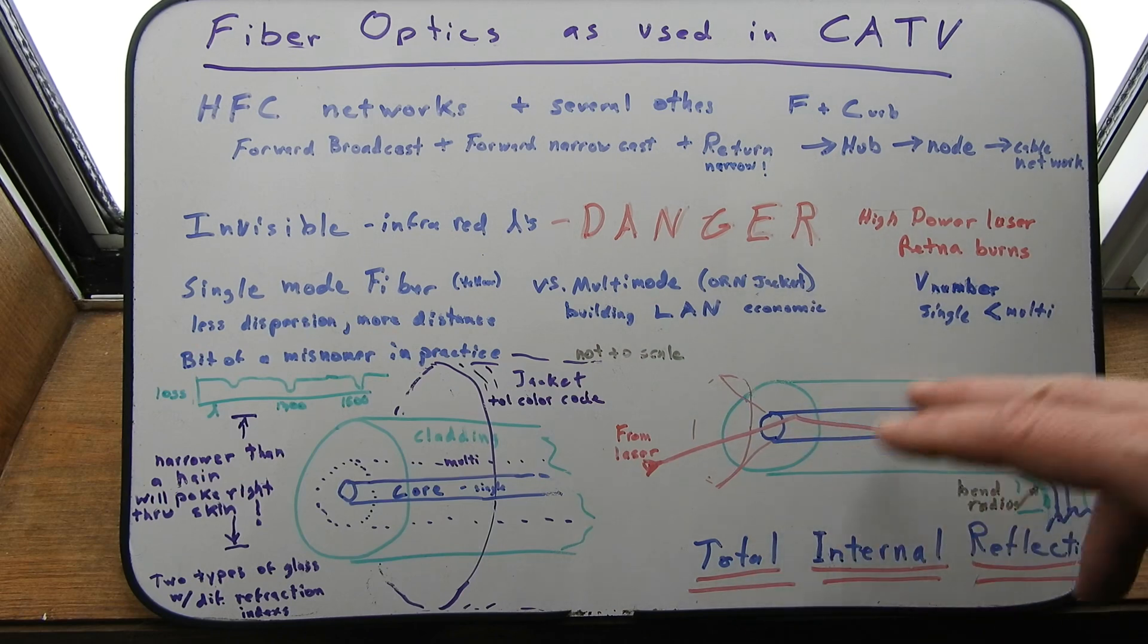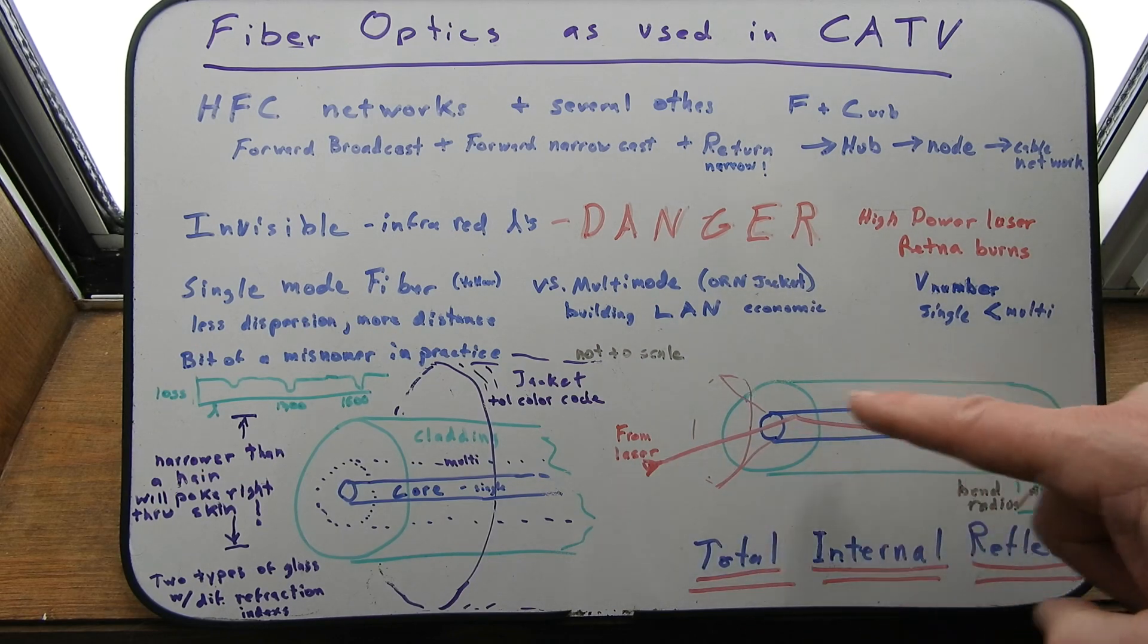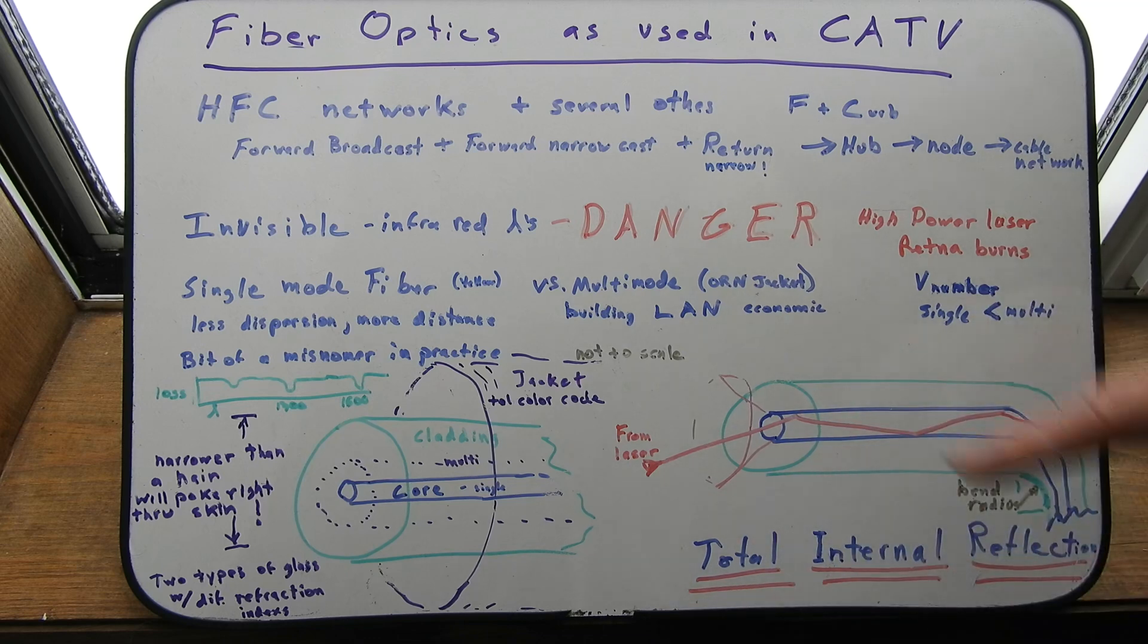So that's your basic propagation down the cable. That's why they call it single mode. Because it's only going to have a limited amount of paths you can go ricocheting down the pipe.